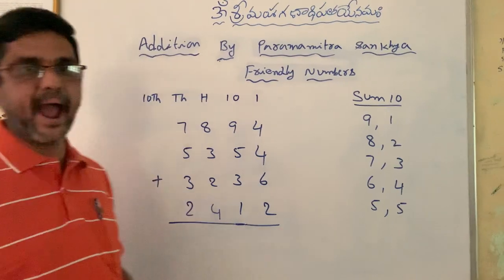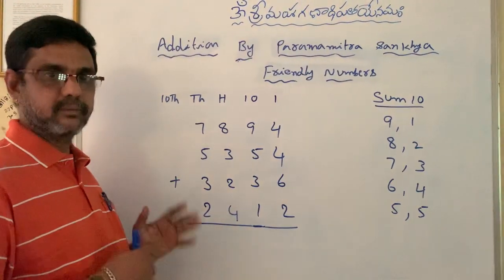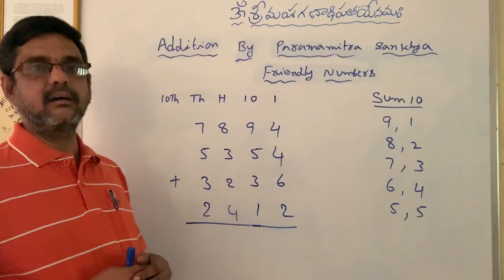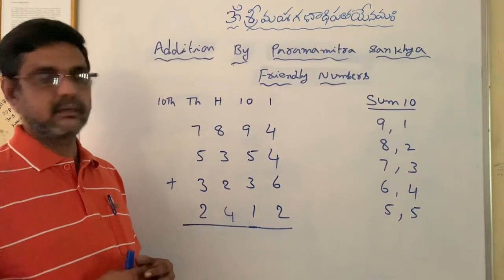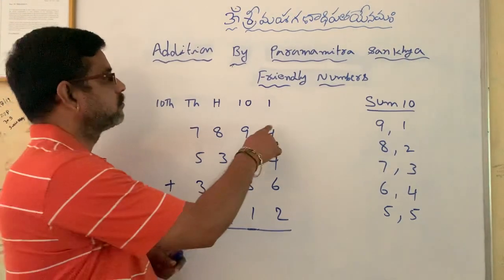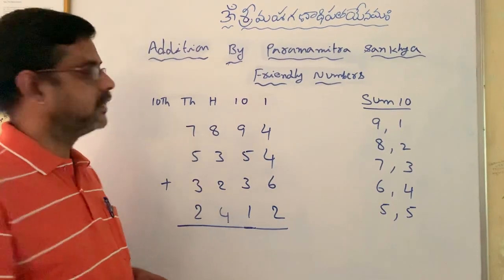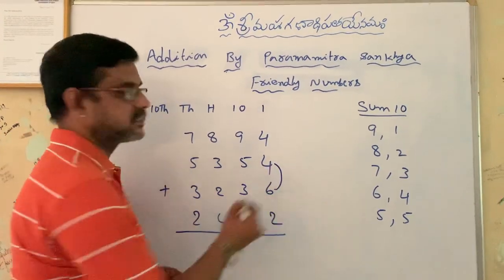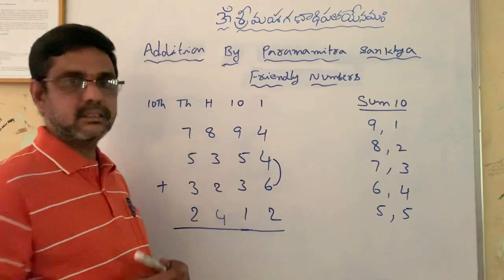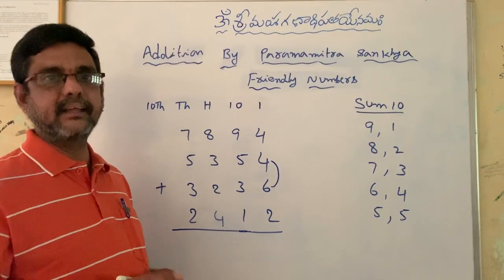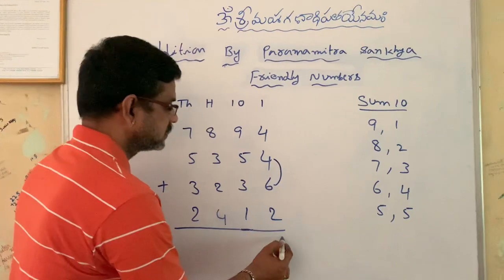By using these friendly numbers I am going to add 4-digit numbers. Now consider the numbers under the unit place column: 4, 4, 6, 2. In this column, 4 and 6 are friendly numbers. So leave those numbers and add the remaining numbers: 4 plus 2 equals 6.